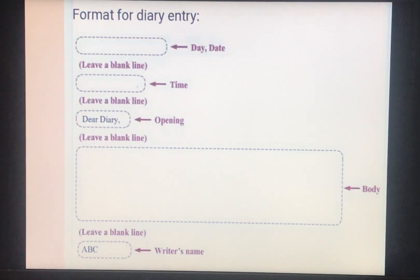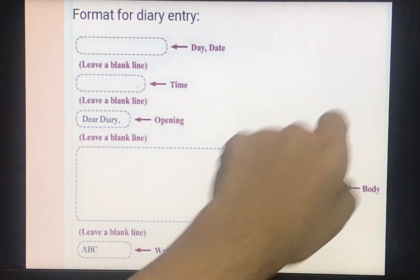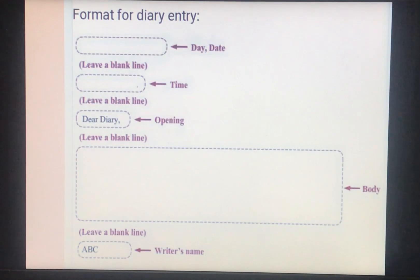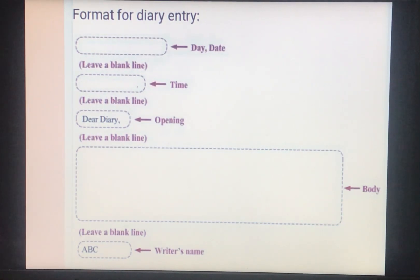First of all, write the day and date. Then leave a blank line, and on the next line write the time — or you can write the time at the side of day and date. Always remember it is very important to mention day, date, and time so that you can recall it afterwards. After that, leave a line, then the opening is done by writing 'Dear Diary.' Then leave a blank line, after which comes the body — where you are free to express your emotions. At the end, write the writer's name or signature.